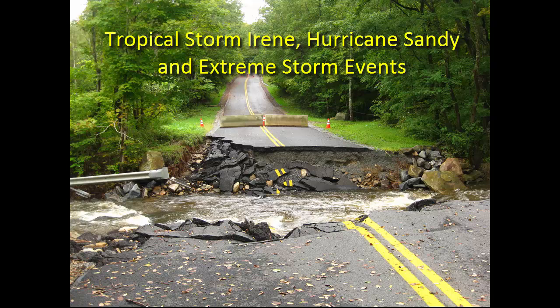The increased runoff volumes generated by very large storms are exceeding the current culvert design standards and the infrastructure capacity to handle flows. Many elements of our current drainage systems are inadequate to convey the excess runoff. Upgrading existing stream crossing structures with alternative designs that meet stream crossing standards not only improves aquatic organism passage but also addresses the issue of undersized culverts and significantly improves the capacity of drainage systems to safely convey storm flows.